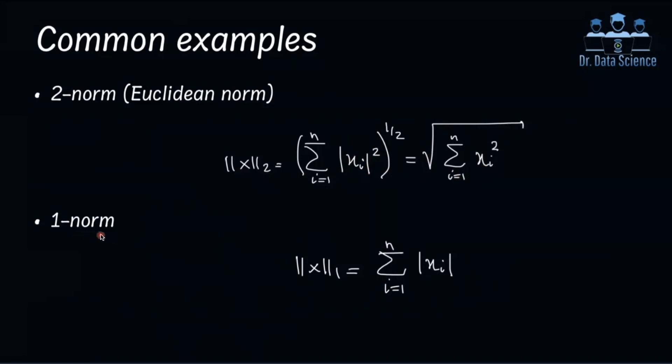And then the 1-norm, based on what we had in the previous slide, is just simply the sum of the absolute values. Here, we cannot get rid of the absolute value, because that's something very important, and in fact, very essential to make sure that what we get as the norm of this function is positive. Otherwise, if these x_i's are negative, then you may get a negative value. So that's why here you have to use this absolute value for each of these elements of the vector x.